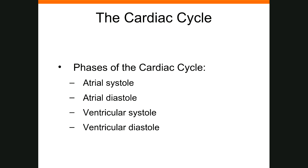Let's look at the mechanical events of the cardiac cycle. Atrial systole begins — depolarization triggers the atrial systole, which is represented by the P wave. The right and left atrioventricular valves are open. About 80% of the blood flows passively from the atrium to the ventricle, but when the atria depolarize, they force the remaining 20% of blood into the relaxed ventricles.